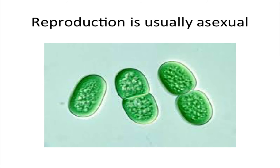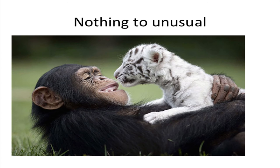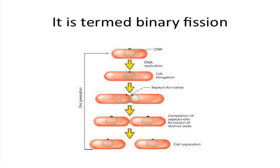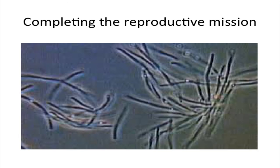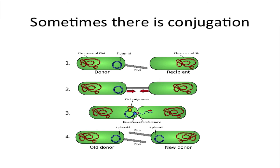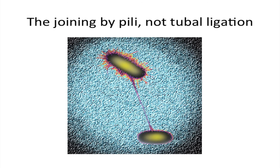Reproduction is usually asexual — nothing too unusual. It is termed binary fission, completing the reproductive mission. Sometimes there's conjugation — they're joined by pili, not tubal ligation.